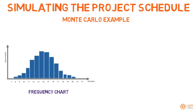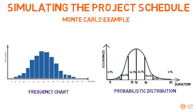The final results were combined into a frequency chart, counting the number of occurrences of alternative duration ranges. As you can observe in the next figure, the durations that occurred most often were 13, 14, 15, and 16 weeks. The potential outcomes were also represented in a probabilistic distribution, showing the likelihood of each duration.